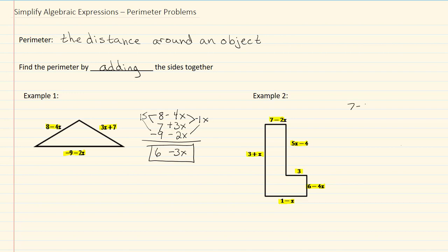So we have 7 minus 2x. I'll need to reorder my 5x minus 4, so I have plus 5x and negative 4. My 3 will go under my negative 4. Then I have 6 minus 4x, 1 minus x, and 3 plus x.